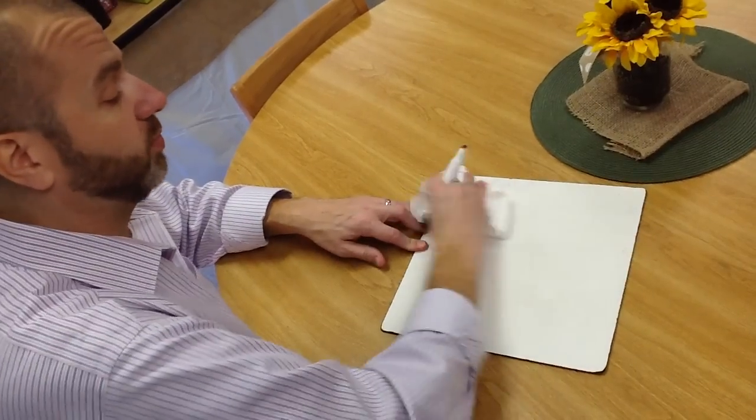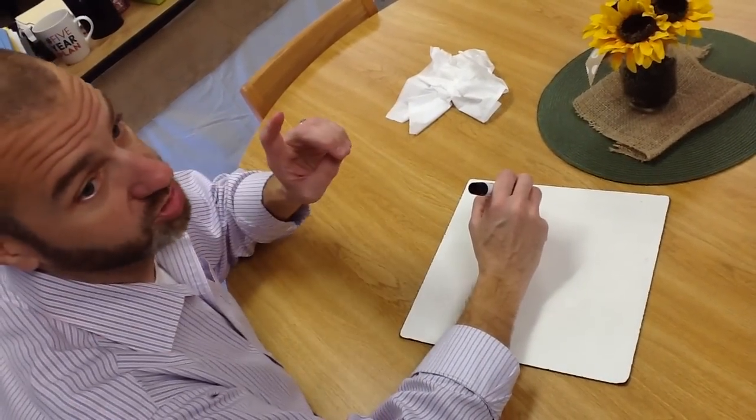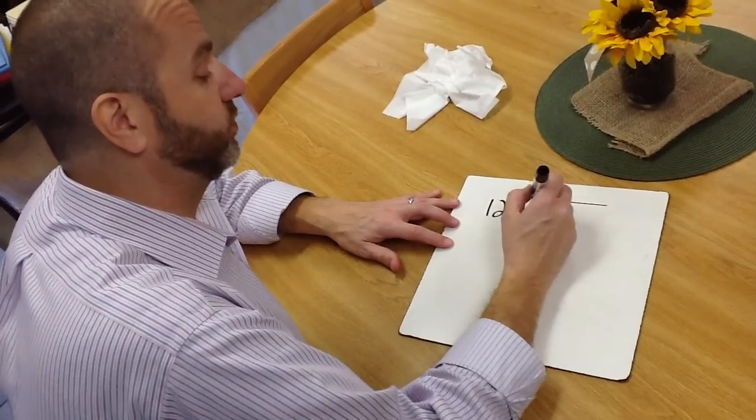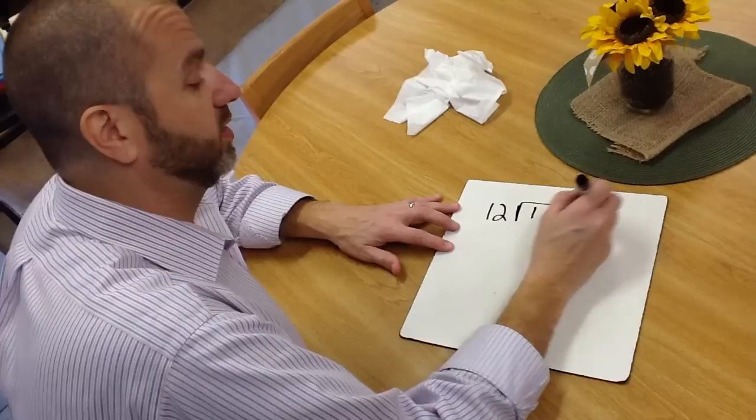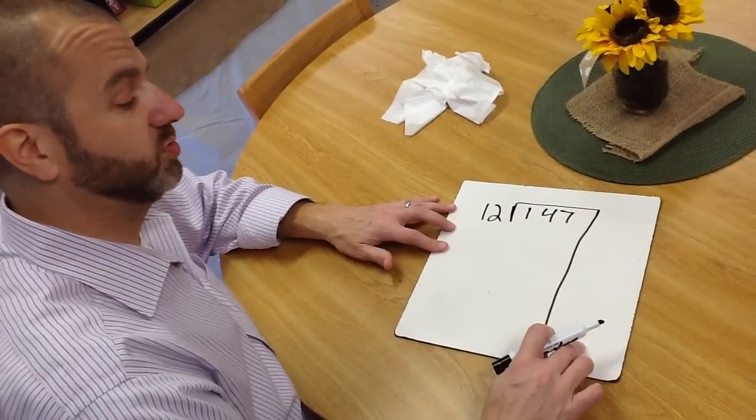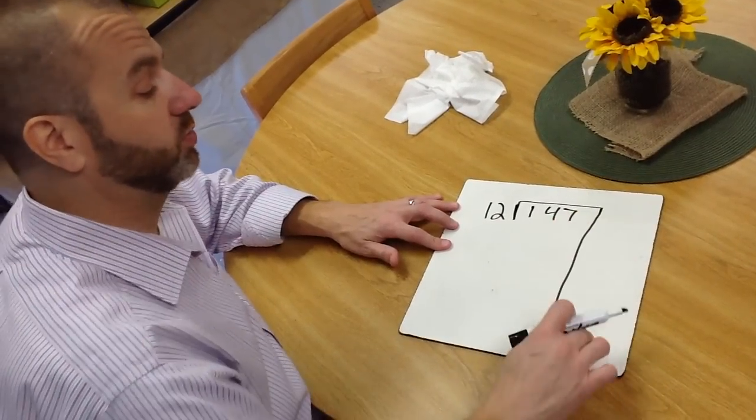...we're going to use the same numbers, and I'm going to show you what the partial quotient strategy would look like. We still have our divisor, we still have our dividend, and then out here we're going to create a little column where students and teachers and parents can work through the process.